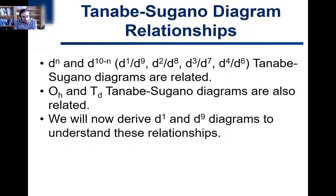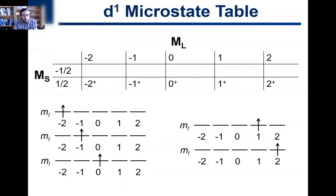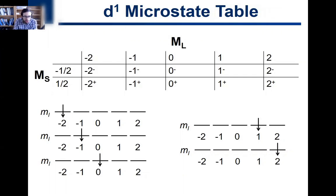What we're going to do now is very quickly derive the D1 and D9 Tanabe-Sugano diagrams to understand these relationships. Fortunately, these are the simplest diagrams and are very quick to derive compared to even D2. We start out with the microstates. For D1, we have only 10 microstates — one electron spin up or spin down in any of the five subshells.